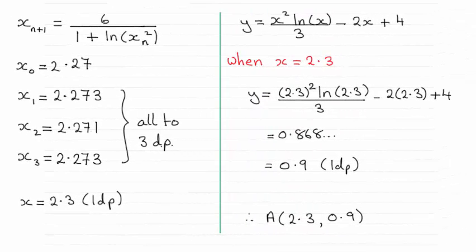Hi there. Now for this last part of the question, we had to give the x and y coordinates of the minimum point A to one decimal place, and you can see that they turn out to be 2.3 for x and 0.9 for y.